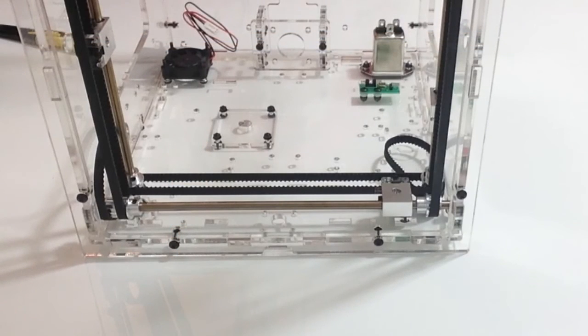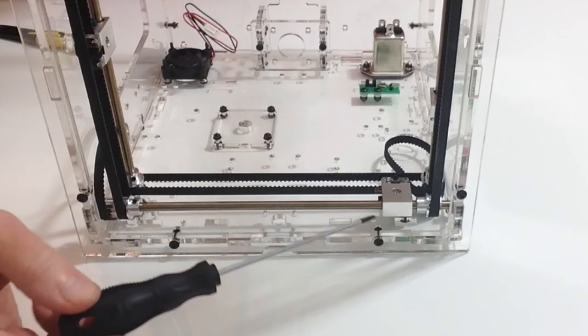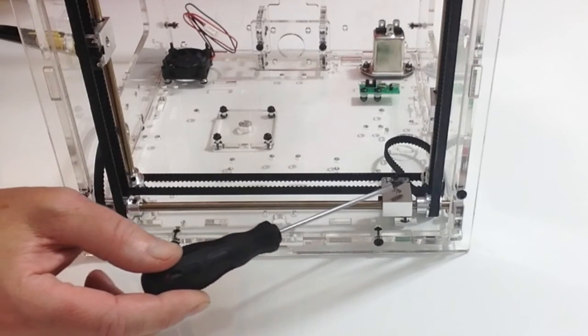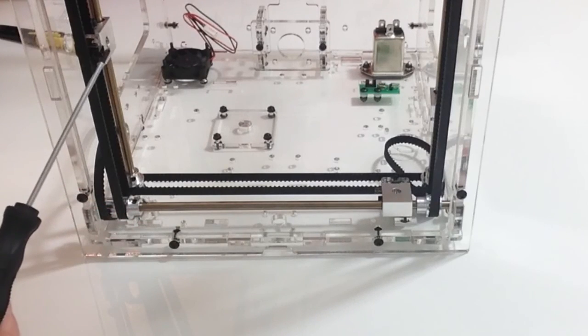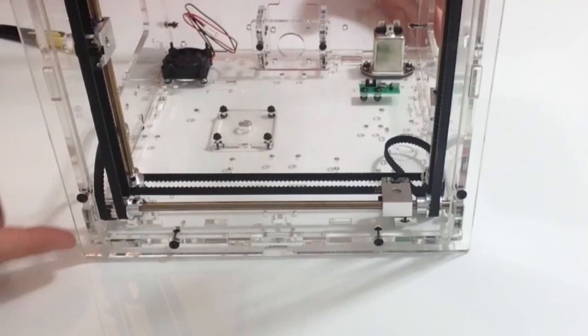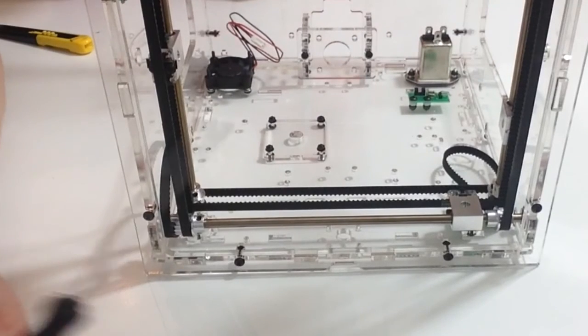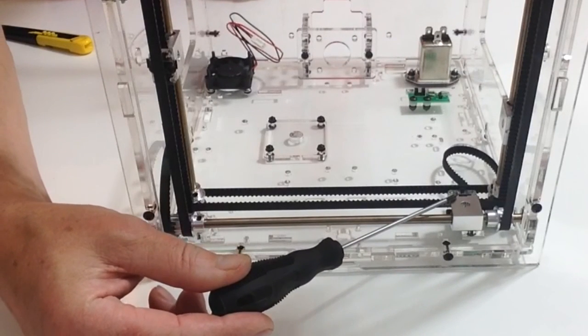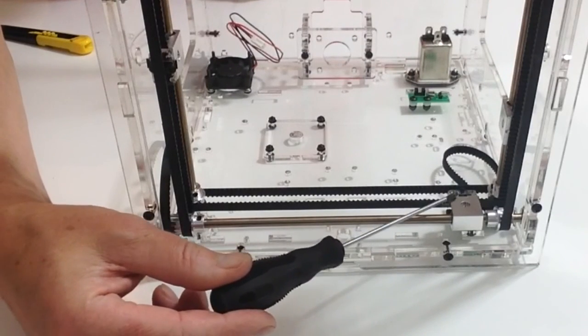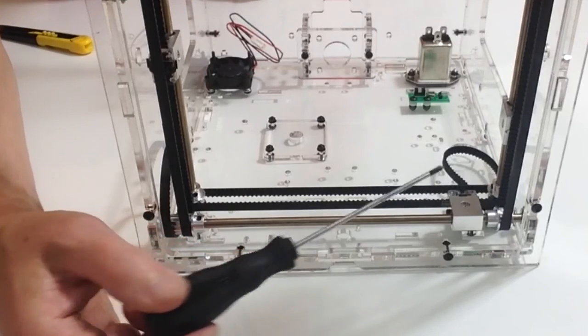In stage 25 we are doing exactly the same as we did before but this time we are doing that on the X axis limit switch whereas previously we did it on the Y axis. So look very carefully, it is exactly the same as before. Follow the instructions and you will see how all of that is attached.